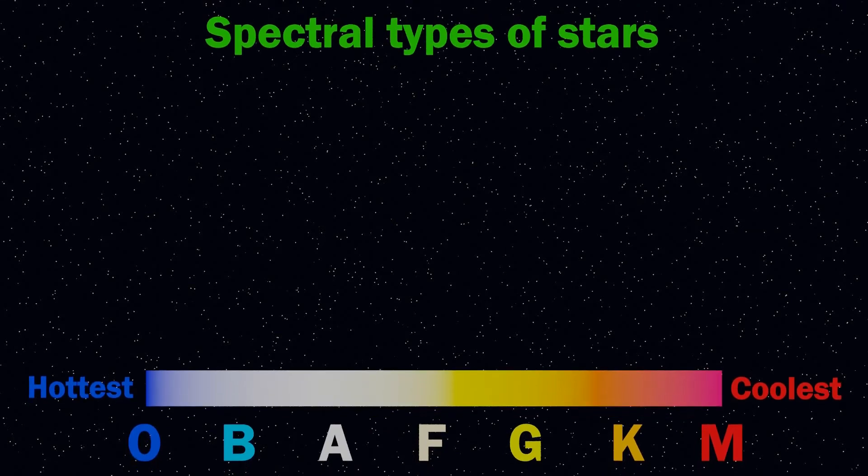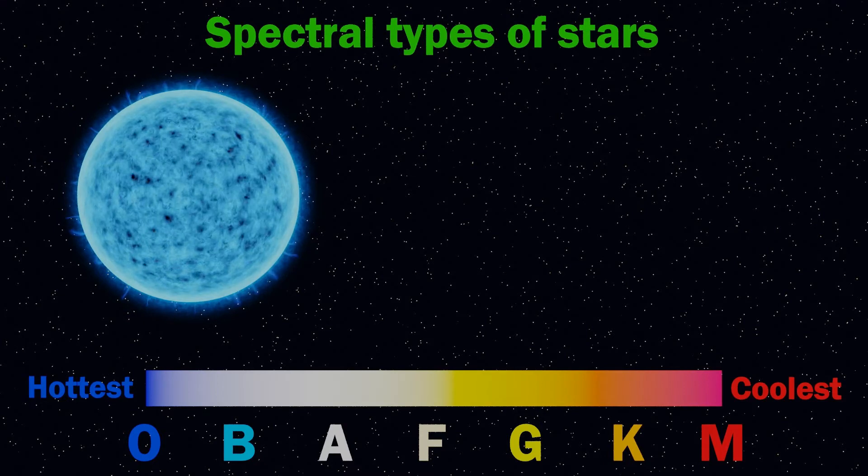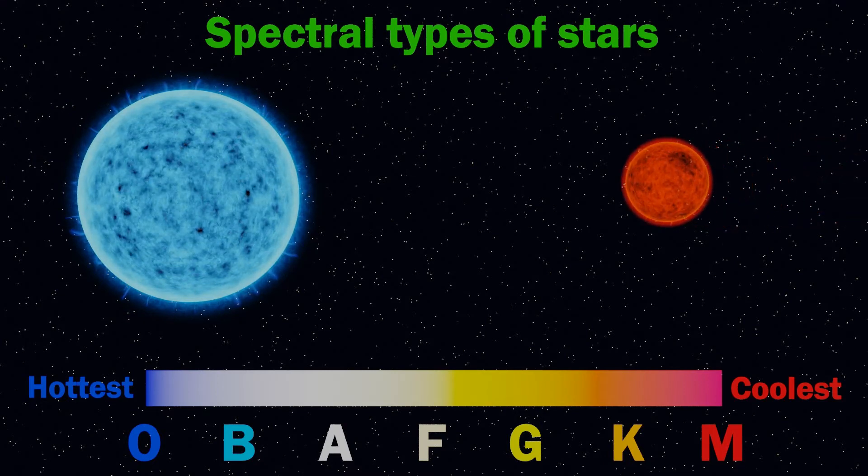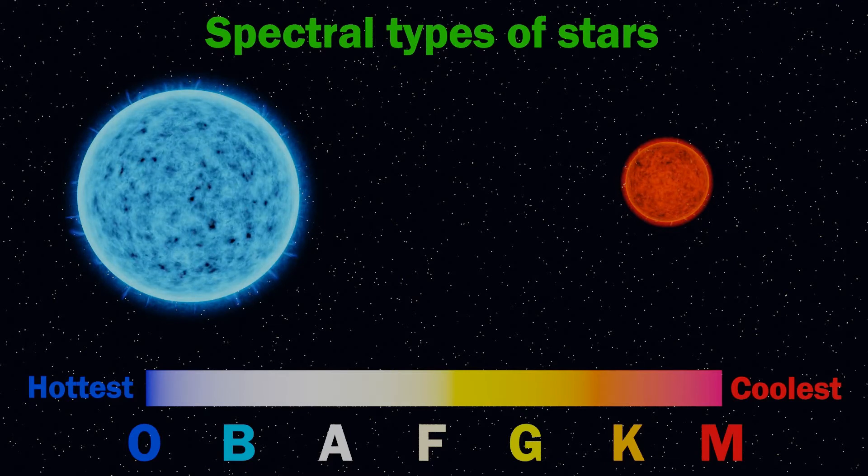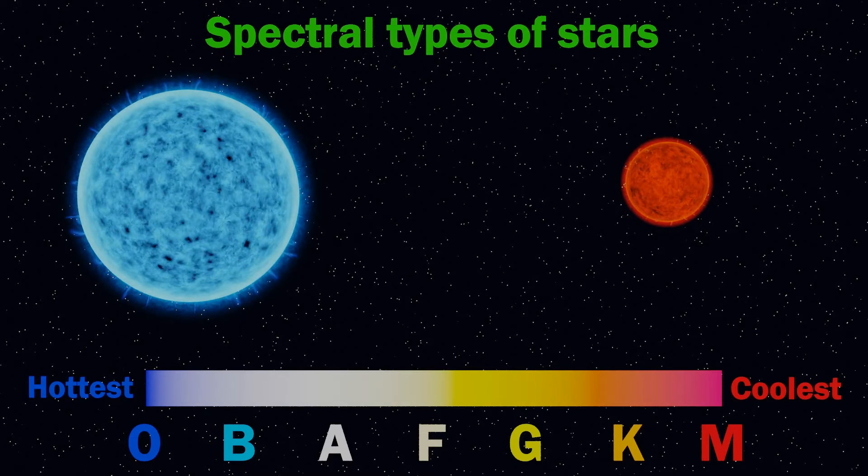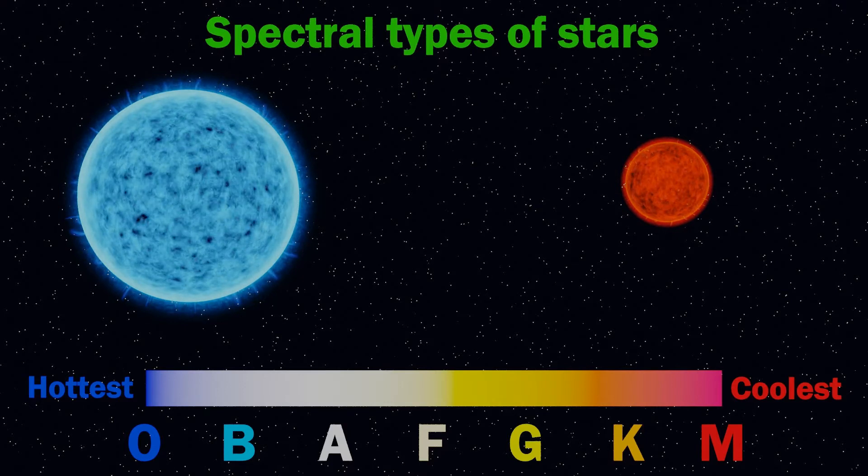Stars, in a similar way, are classified by their temperature and therefore their color. From the hottest blue-white O-class stars, down to the coolest M-class red stars. Red dwarfs are the coolest of stars, with surface temperatures between 2,000 and 3,600 Kelvin. That's about 1,700 to 3,300 degrees Celsius.